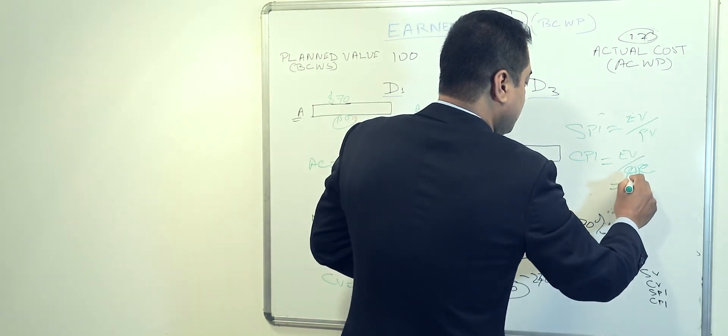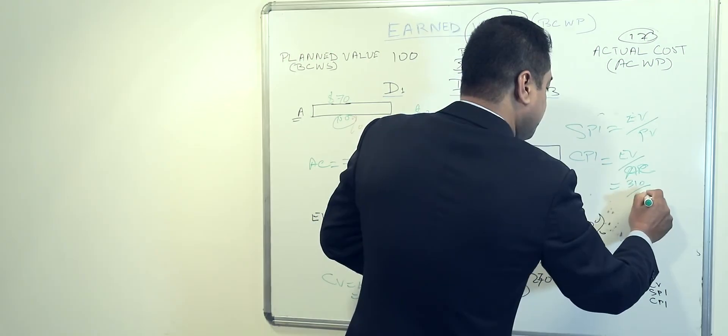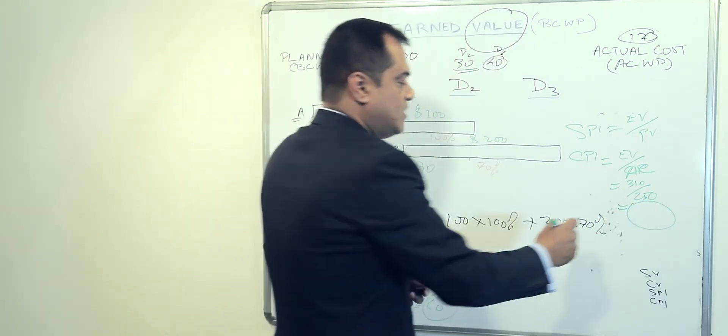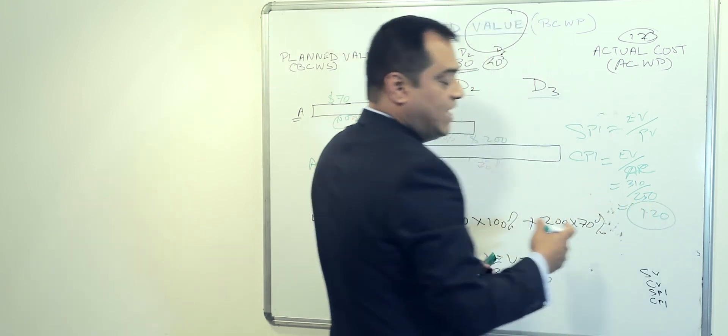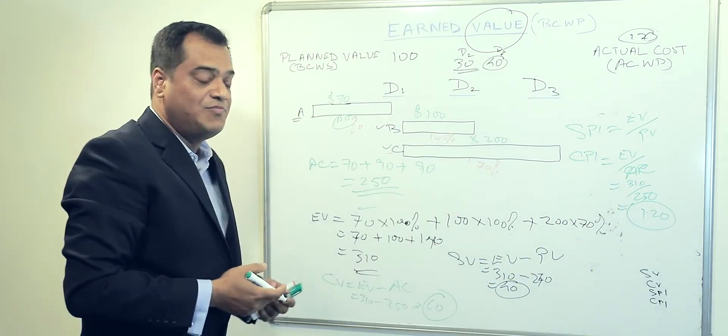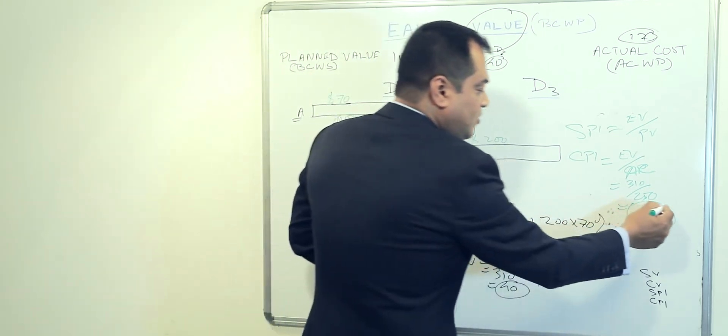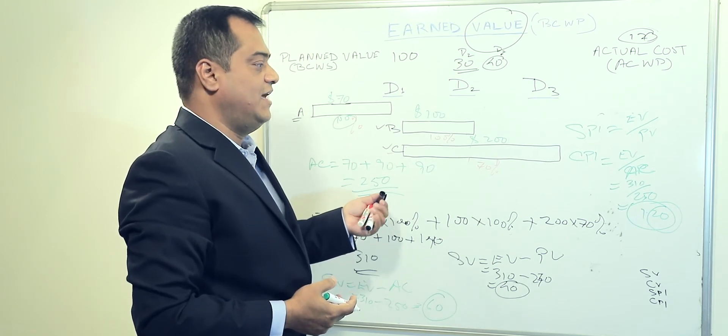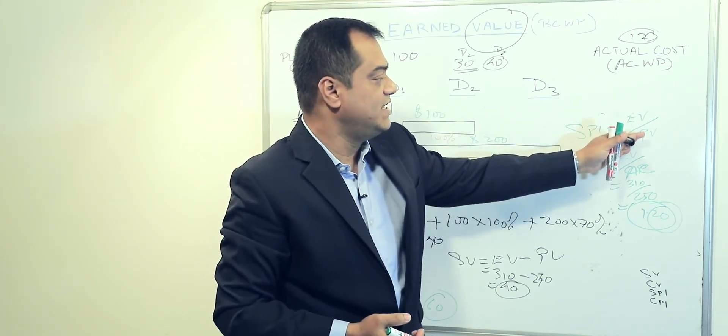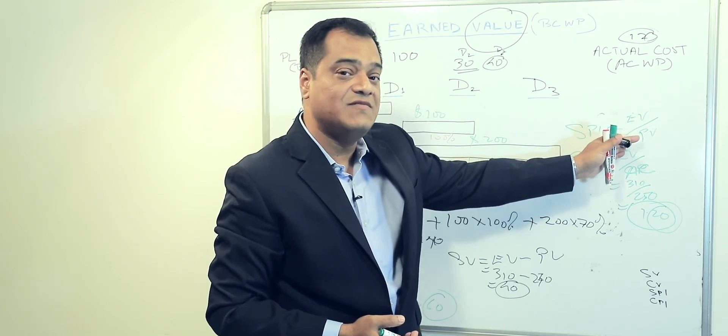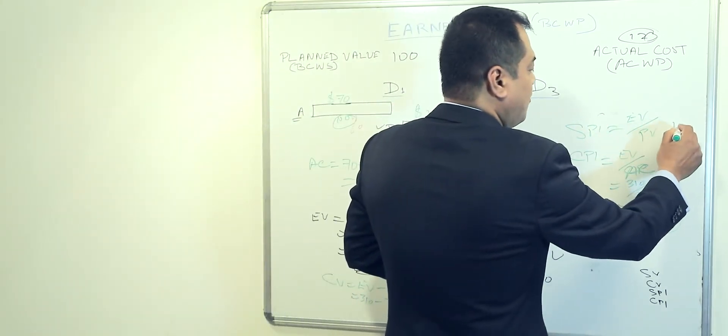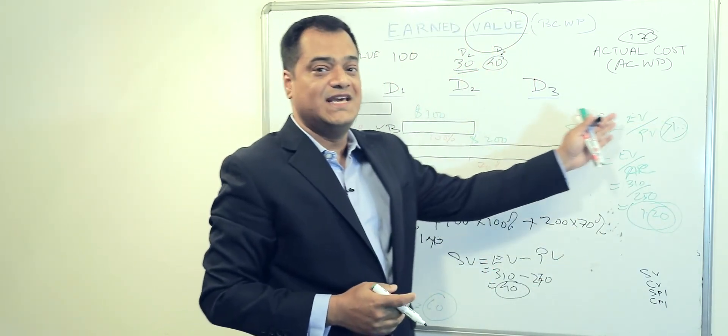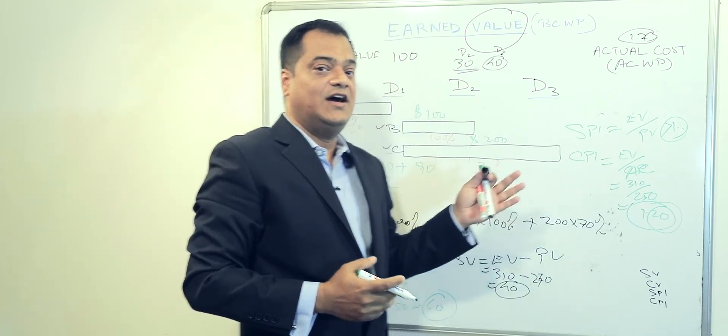So that makes it 310 divided by 250, whatever the percentage is, the efficiency. Let's presume this is 1.2. I have not calculated, just coming up with a number. That means we have performed 20% better than what is the actual cost. Likewise, if we see the percentage that comes between earned value and plan value, if that number is above 1, that means that much of percentage we have performed better in the project.